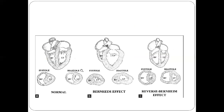What happens here is when there is severe LV hypertrophy or severe LV there is an increase in LV pressure. Whenever this LV pressure is high, due to this increased LV pressure, the interventricular septum shifts towards the right ventricle and almost obstructs it.